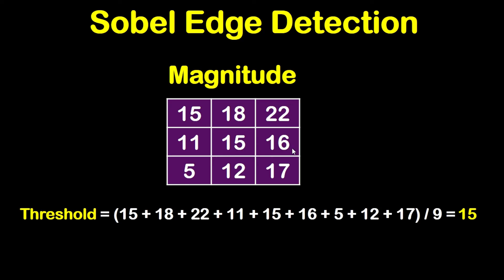After getting the magnitude matrix, we will get the threshold, and based on this threshold we will determine the edge pixels. To get the threshold, we average the magnitude values: 15 + 18 + 22 + 11 + 15 + 16 + 5 + 12 + 17, divided by 9 (the number of values). This gives approximately 15, which is the threshold.